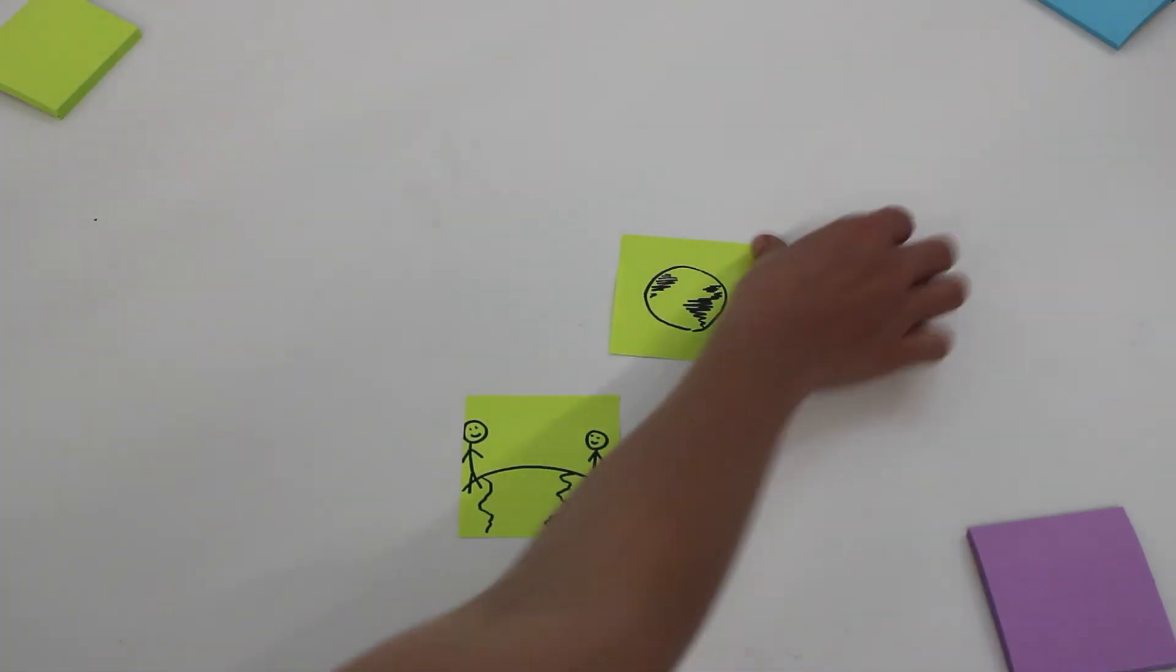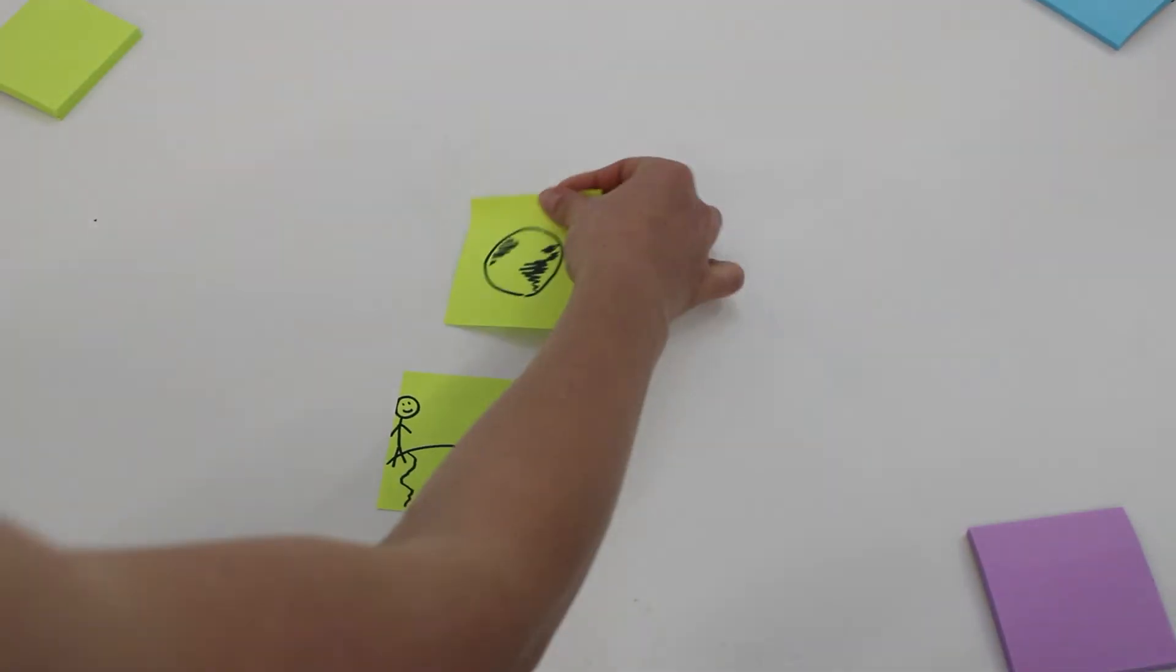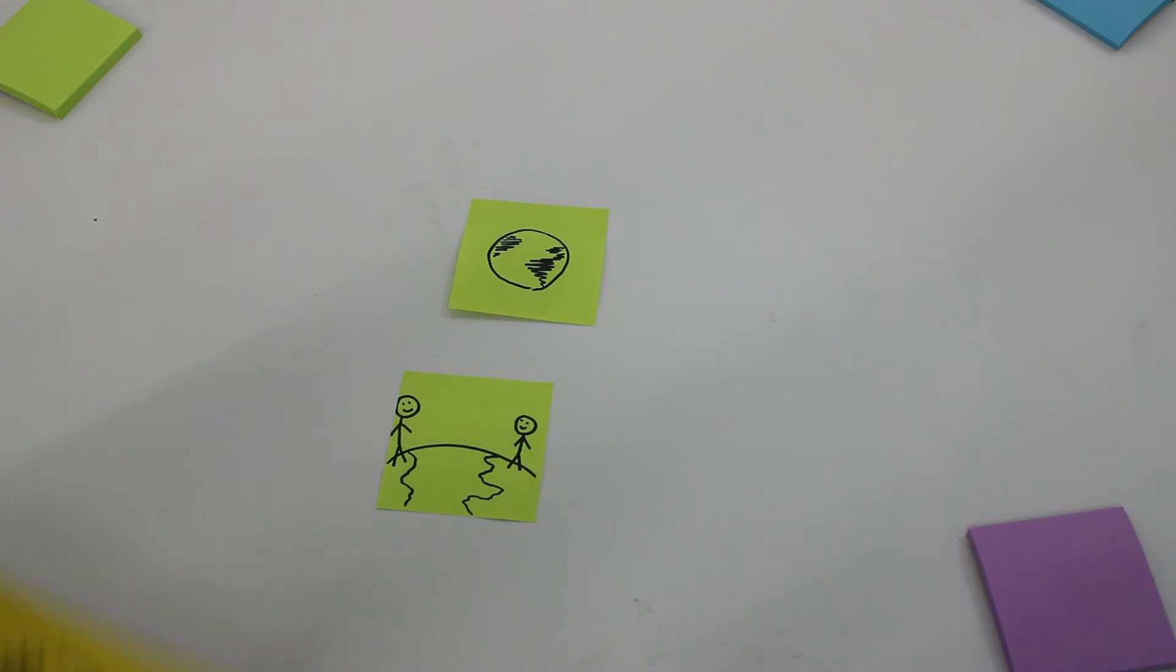No matter where you are on earth, you see the same phases of the moon, although people in the north of the equator see them one way and people south of the equator see it flip the other way. Remember, when it comes to the phases of the moon, it all depends on how you look at it.